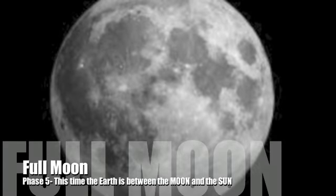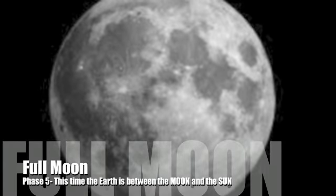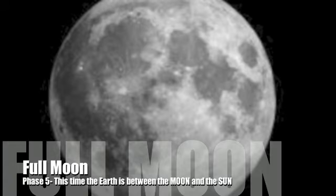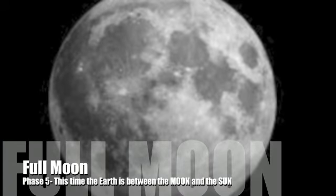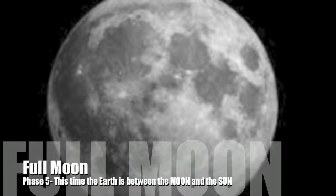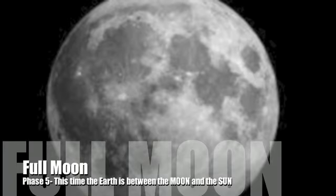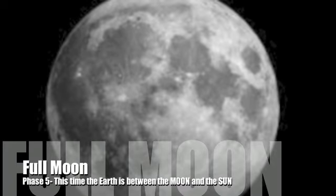About halfway through the cycle, we see the full moon. Keeping track of the phases helps us determine the tides — spring and neap. This is also good for werewolves to know so they can know when they shift.